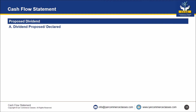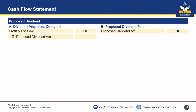Next, let us come to proposed dividend. If dividend is proposed or declared, the entry will be: profit and loss account debit to proposed dividend account. Next, if proposed dividend is paid, the entry will be: proposed dividend account debit to cash account. So only two entries in proposed dividend: either dividend is proposed or dividend is paid.